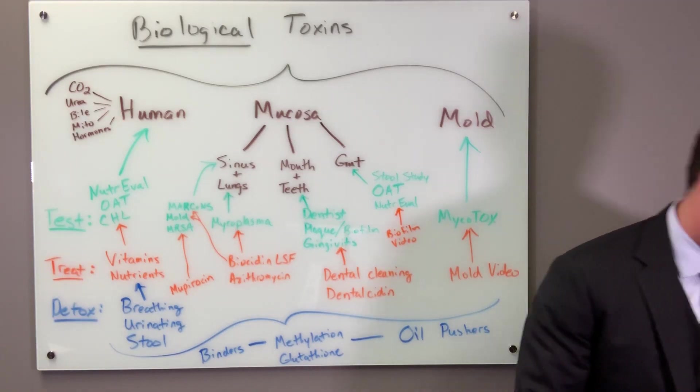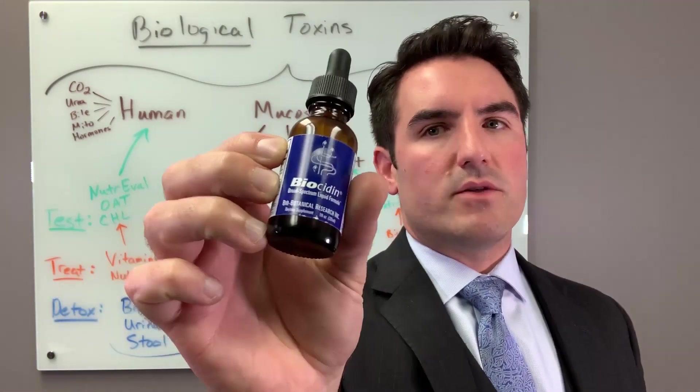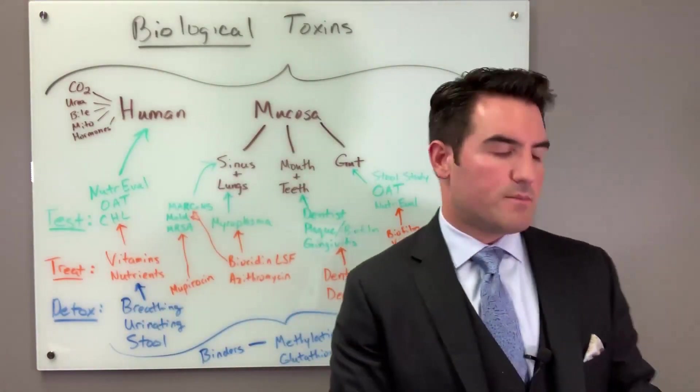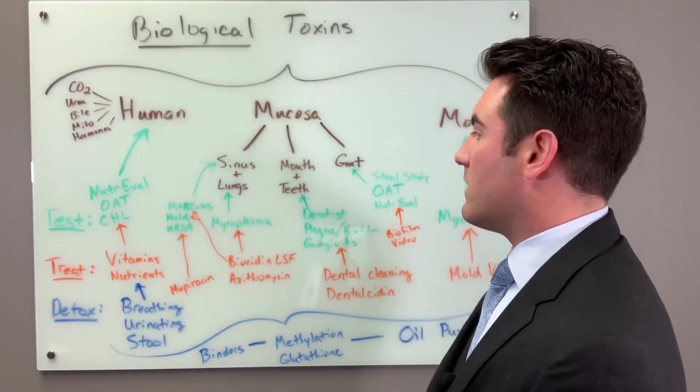You can also nebulize Biocidin through a nebulizer. You can't use that liposomal one, you've got to use a regular one. And it depends on what kind of nebulizer you use, but you can use four to ten drops in the nebulizer and breathe in and try to kill some of the fungus, bacteria that may be growing in your lungs.